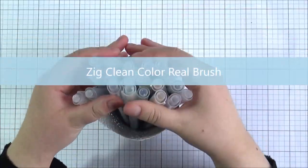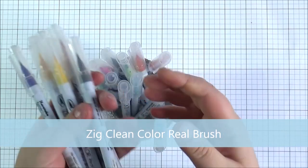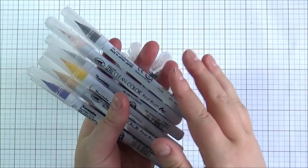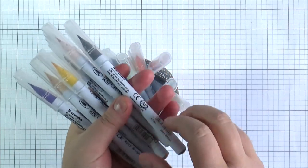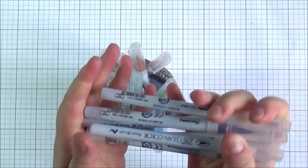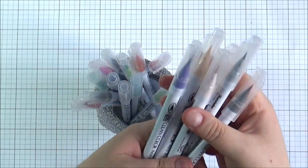Next up is the Zig Clean Colour Real brush markers or pens. I really like these. I personally use them with water as watercolours but I have included them in the pen section just because I know some people use them without the water and they blend really well if you don't use water but they blend very well if you do as well actually.